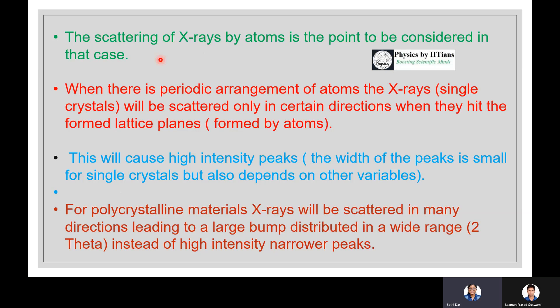Why is it so? The scattering of X-rays by atoms is the point to be considered. When there is periodic arrangement of atoms, the X-rays will be scattered only in certain directions when they hit the formed lattice planes. This will cause high intensity peaks with small width for single crystals, but the width also depends on grain variations. For polycrystalline materials, X-rays will be scattered in many directions leading to a large bump distributed in a wide range (2-theta) instead of high intensity narrower peaks.